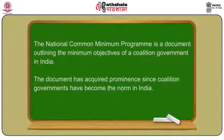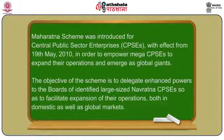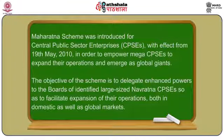The National Common Minimum Programme emphasized full managerial control and autonomy to successful profit-making enterprises to operate in a competitive environment. The government reviewed the powers of delegation of authority of boards of Navaratna and Miniratna enterprises along with profit-making CPSCs to ensure enhanced delegation of power during August 2005. The government also introduced the concept of the Maharatna scheme in February 2010, with the objective of delegating enhanced powers to boards of large-sized Navaratna enterprises to facilitate expansion of their operations in both domestic and global markets.